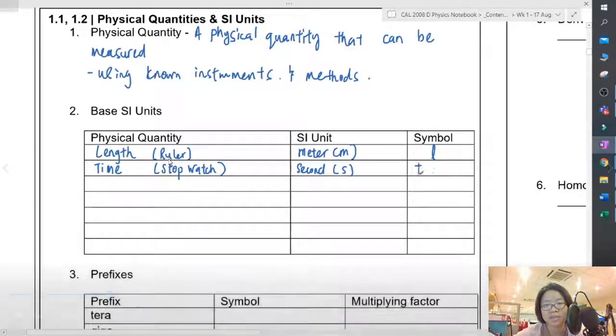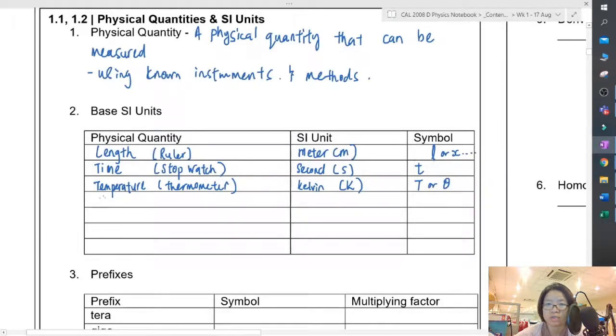SI unit here is seconds (s); symbol you can use lowercase t or t subscript one. Temperature uses a thermometer; SI unit is Kelvin, symbol is T or theta. Current is measured using an ammeter; SI unit is ampere (A), and the symbol for the unit is I.